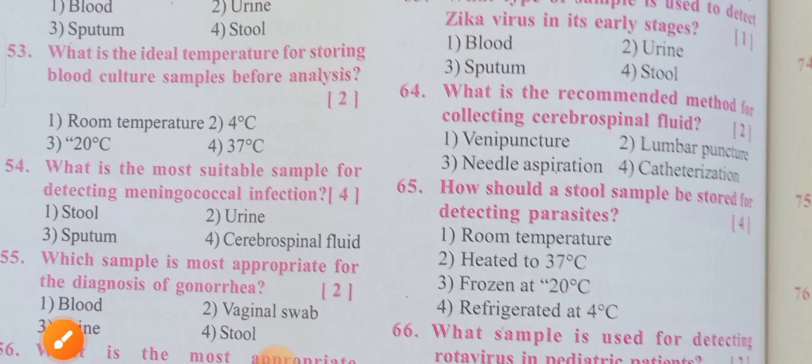Students, please revise the fourth question. The ideal temperature for storing blood samples for culture analysis is 4 degrees centigrade. Option 2 is the correct answer.